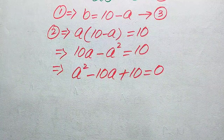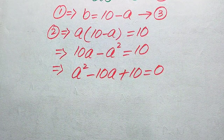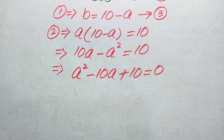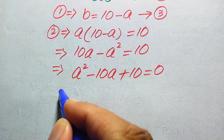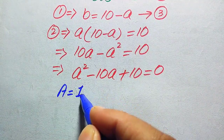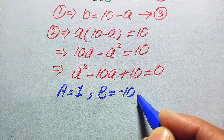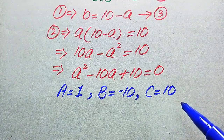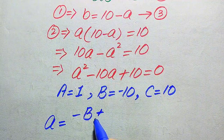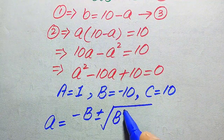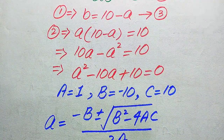There are three methods to solve a quadratic equation: the first method is factorization, the second is completing the square, and the third is applying the quadratic formula. We will use the quadratic formula to solve this equation. The quadratic formula states: a equals negative capital B plus or minus square root of B squared minus 4AC, divided by 2A.